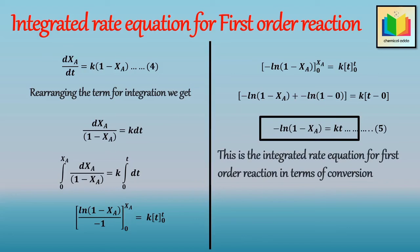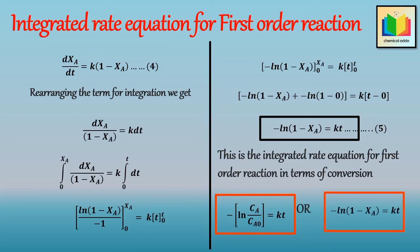Hence we get the integrated rate equation for the first order reaction in terms of concentration as: minus ln(C_A/C_A0) equals K·T, and in terms of conversion as: minus ln(1 minus X_A) equals K·T. That's all about the integrated rate equation for the first order reaction.